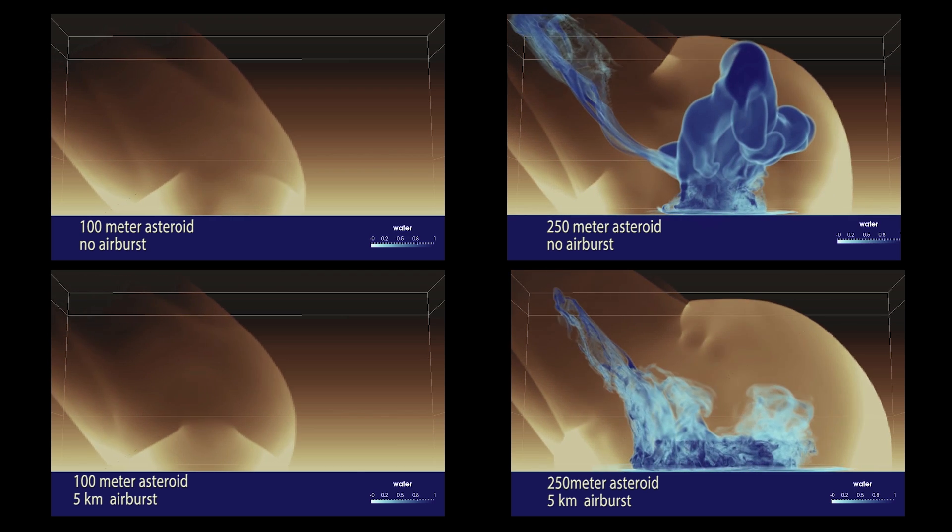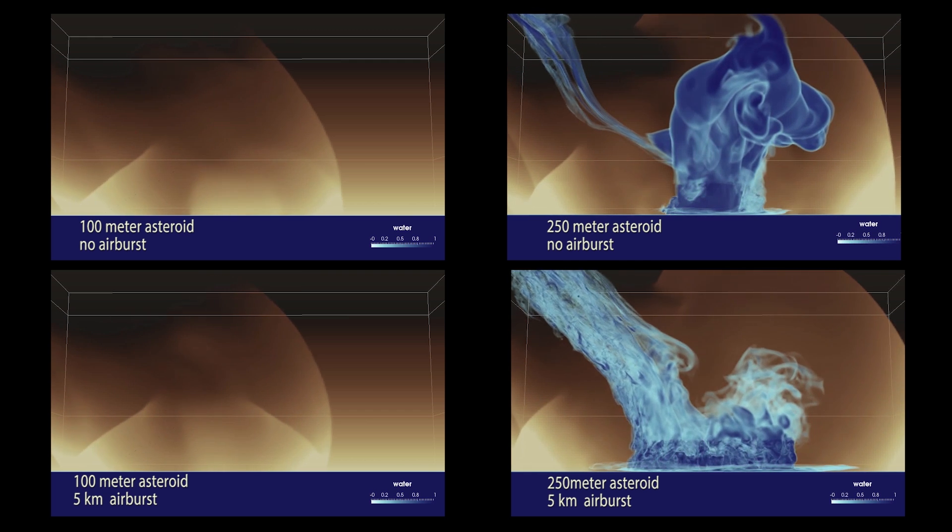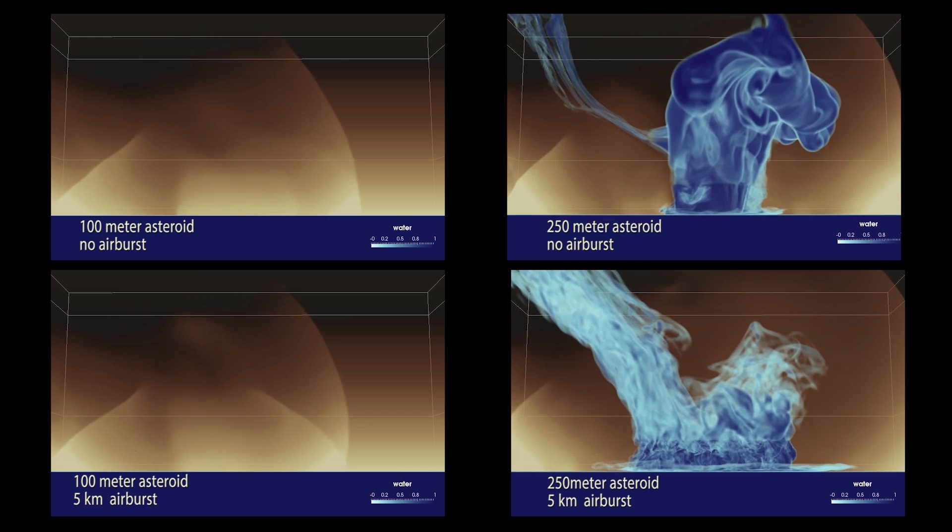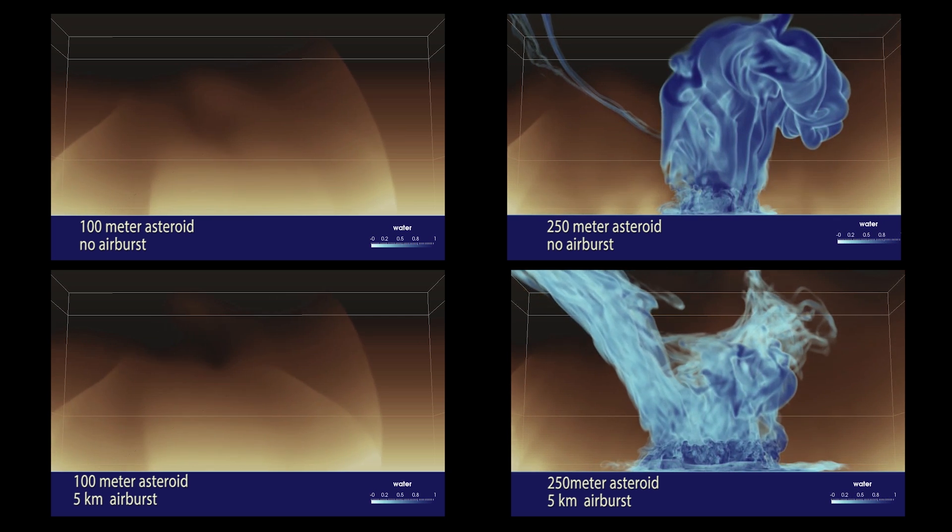Here, a light-colored pressure wave shows the asteroid's effect on the atmosphere. In addition, a large plume of water rises from the largest asteroid impact. Clearly, more kinetic energy is transferred to the water in this simulation.